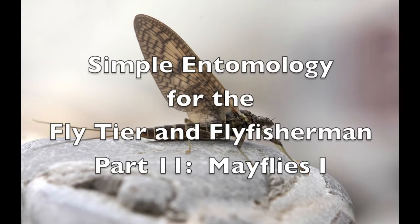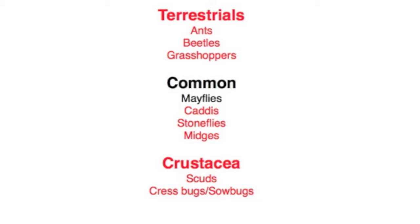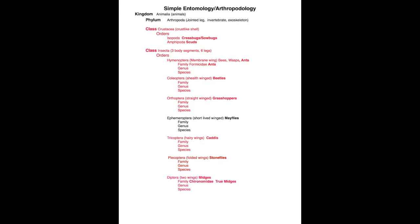Welcome back to Simple Entomology for the Fly Tier and Fly Fisherman, Part 11. I'm Raj Kletke, and today we'll be starting our look at mayflies. Mayflies are the last of the common organisms we'll be looking at in this series and are my favorite organism to use for fishing for trout. Mayflies are in the class Insecta and in the order Ephemeroptera.